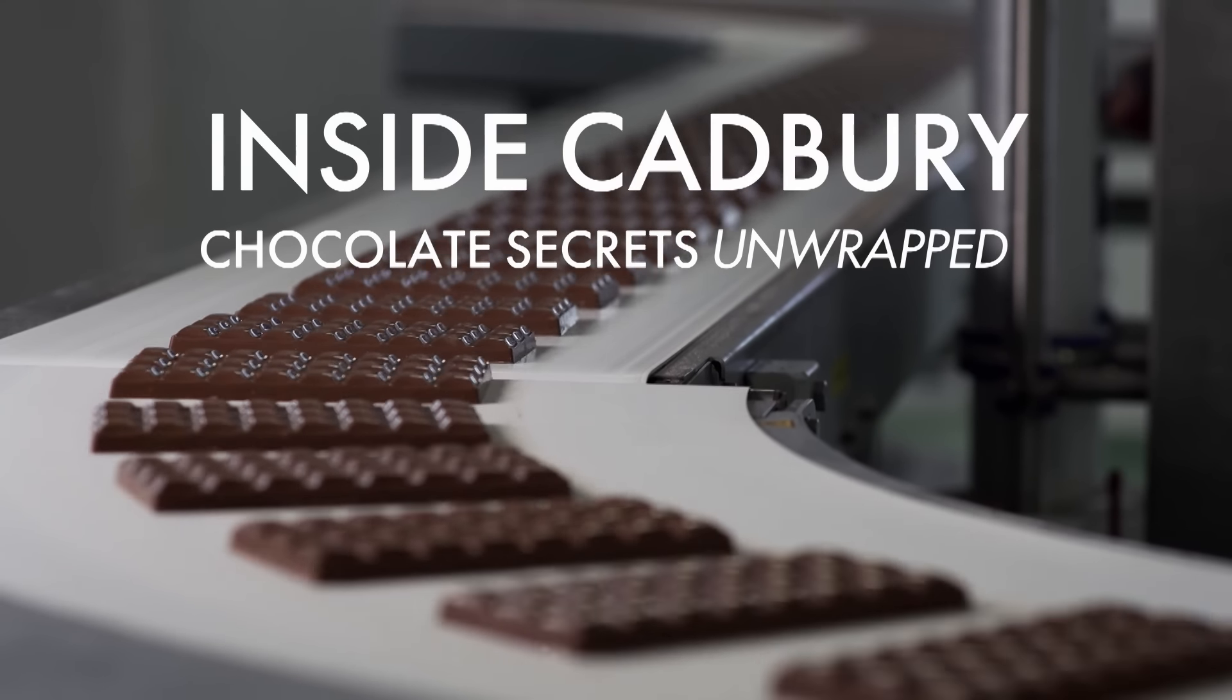This precious confection starts life just as it always has in a building called the Chocolate Block. From here, the liquid chocolate runs through the entire factory like blood through its veins.